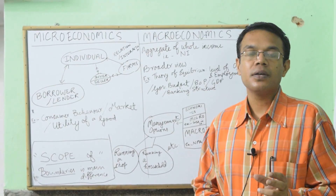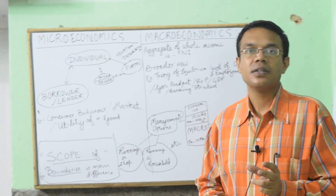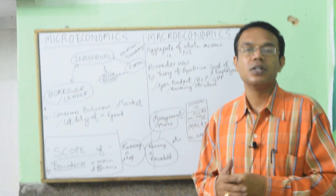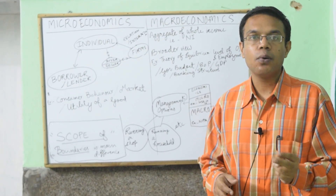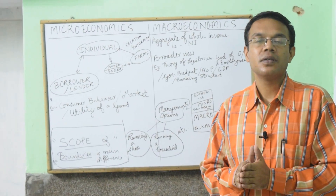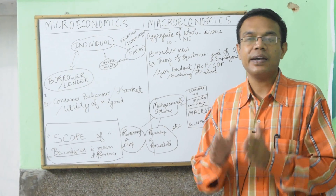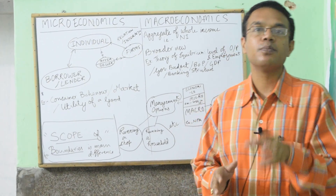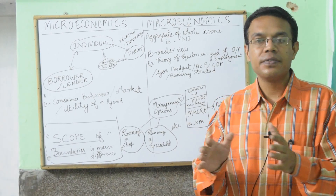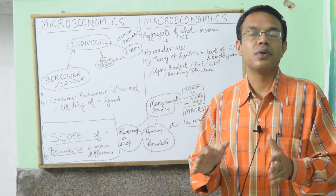Microeconomics, as the term suggests, has been made up with two words — micro and economics. Micro means it talks about, or takes into consideration, a very small portion of a good, of an area, or of any temporal thing.